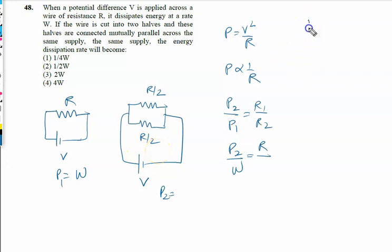Using the parallel resistance formula, 1 upon x equals 1 upon R/2 plus 1 upon R/2, which is 2 upon R plus 2 upon R, so 1 upon x is 4 upon R. Therefore x equals R/4, meaning R2 is R/4.